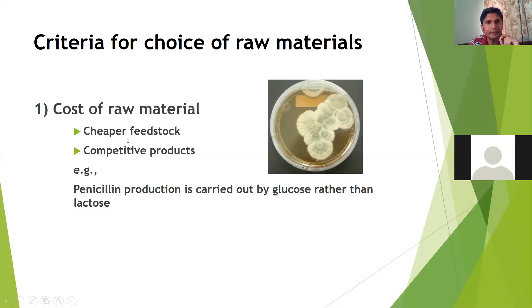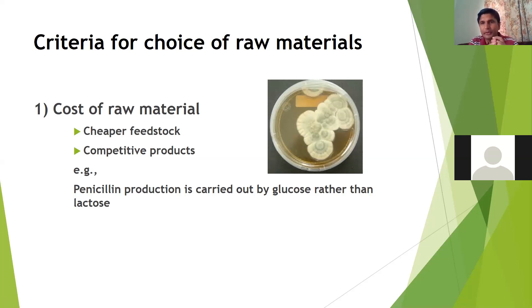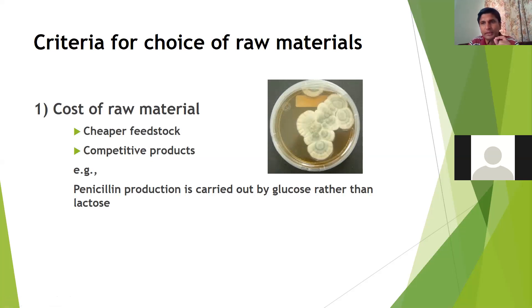If we select raw materials with a lower price, our product will be very competitive. For example, penicillin production is carried out using glucose — we mostly use those raw materials for penicillin production that contain glucose. Penicillin production could be more efficient on lactose as a carbon source, but we mostly select glucose-containing raw materials because they are comparatively cheaper than lactose-containing raw materials.